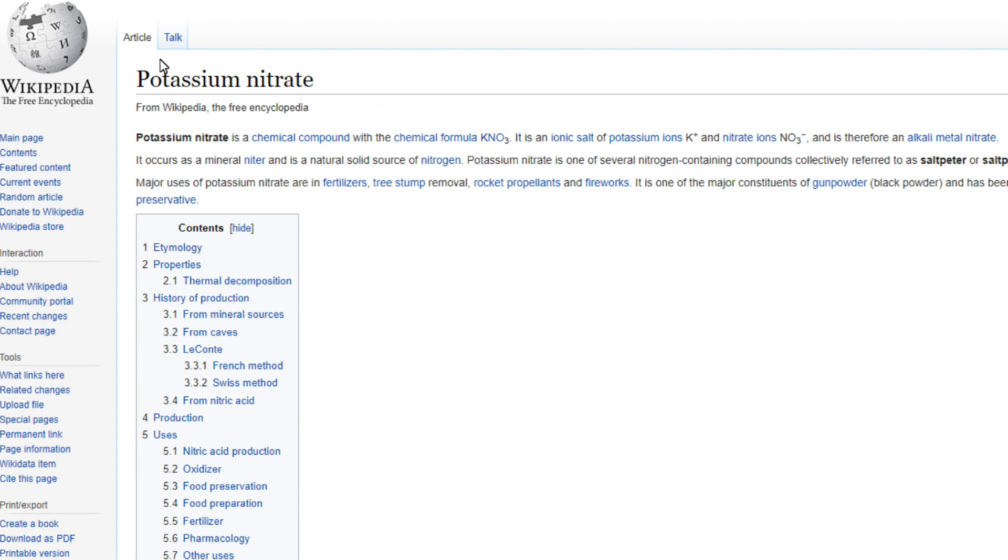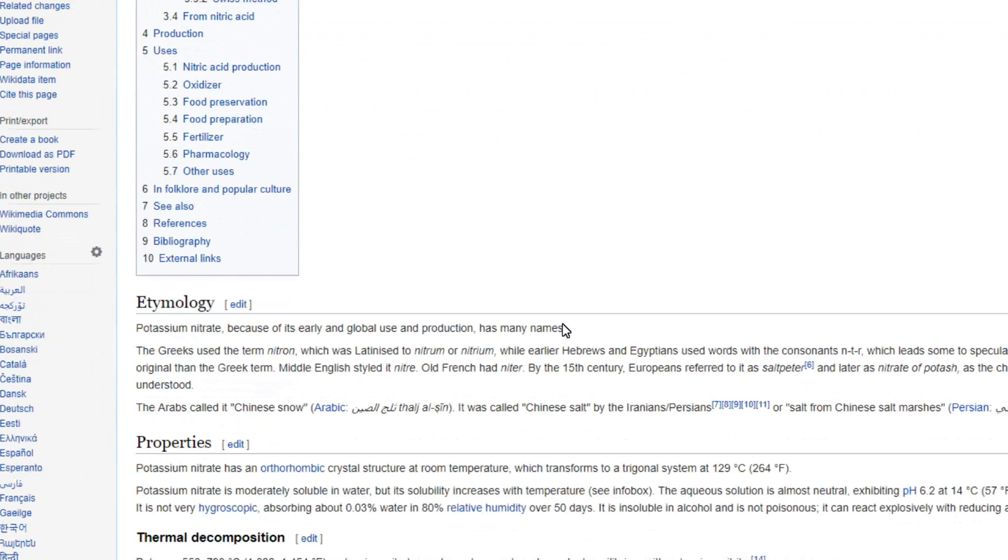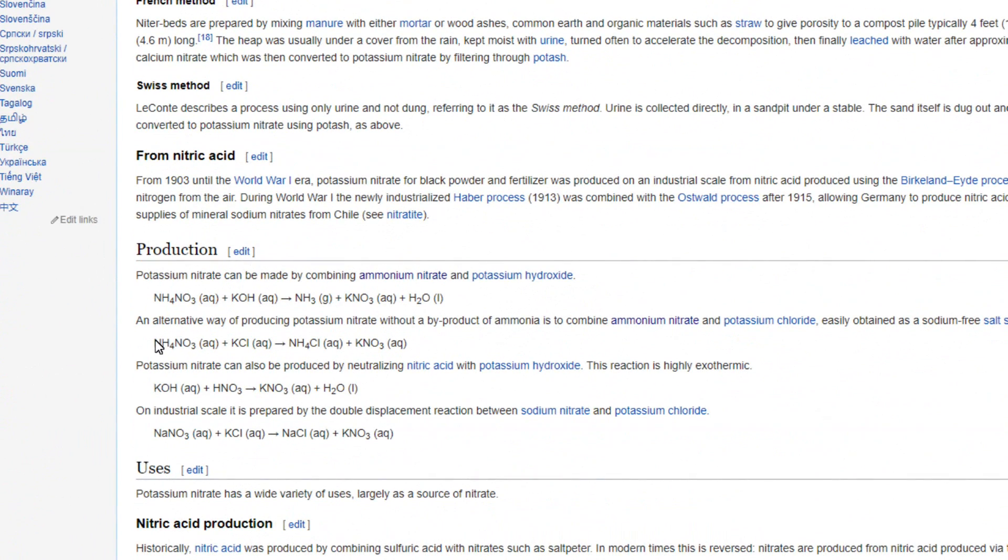Alright, so today I'm going to be making potassium nitrate, which is a really useful chemical in a lot of reactions and it's a fantastic oxidizing agent. To be making this, I'm going to follow this reaction right here using the ammonium nitrate that I made in a previous video and a surplus of potassium chloride that I have.